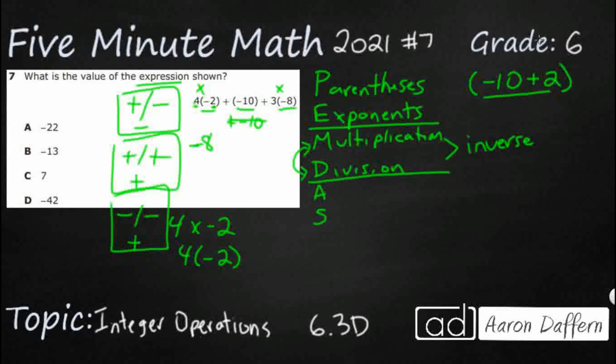The next multiplication is going to be this right here, three times negative eight. So let me just copy down this plus negative 10. So then I've got this plus and I've got this three times negative eight. Well, that's going to be 24, but it's a negative 24 because I've got a positive and negative. Plus negative 24. So now we have all of our multiplication out.